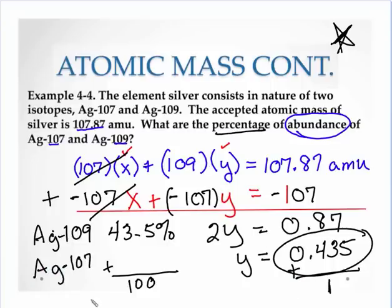It's irrelevant what you choose. You'll get the same answer, assuming your algebra's right. So the sum of my percentages have to equal 100. So that means that my silver 107 is 56.5%. Okay?